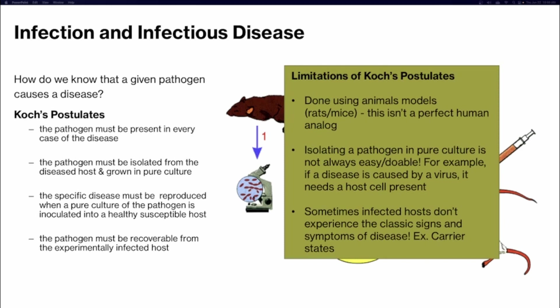Koch's postulates limitations include: it uses animal models, which aren't a perfect analog to humans; isolating a pathogen can be very difficult — for example, isolating a virus in pure culture requires its host cell since viruses are parasites that need a host cell to replicate; and sometimes the infected host doesn't experience classic signs and symptoms. An example is the carrier state — someone can be a carrier of a pathogen, like Typhoid Mary, who carried Salmonella typhi.